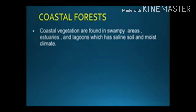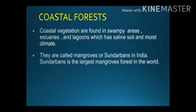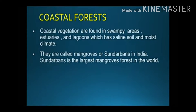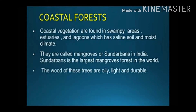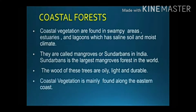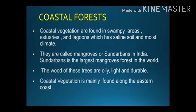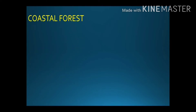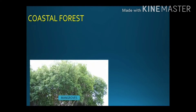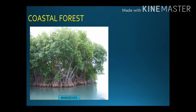Coastal vegetations are found in swampy areas, estuaries, and lagoons with saline soil and moist climate. They are called mangroves or Sundarbans in India. As you all know, Sundarbans is the largest mangrove forest in the world. The wood of these trees is oily, light, and durable. Mangroves protect us from tsunami and also from high tides — they are a very important part of the ecosystem.